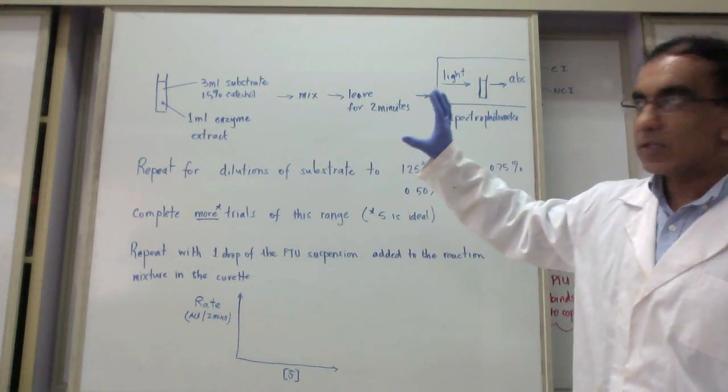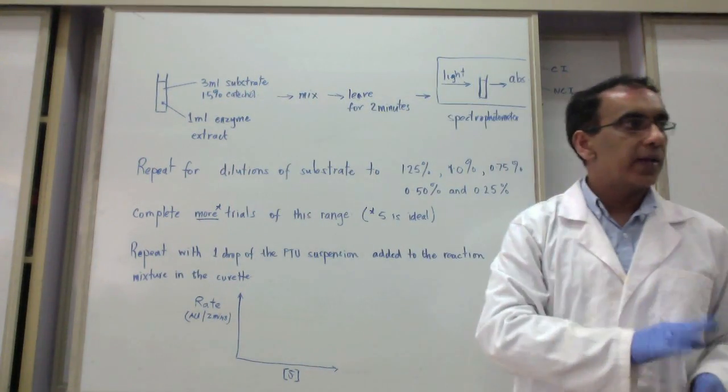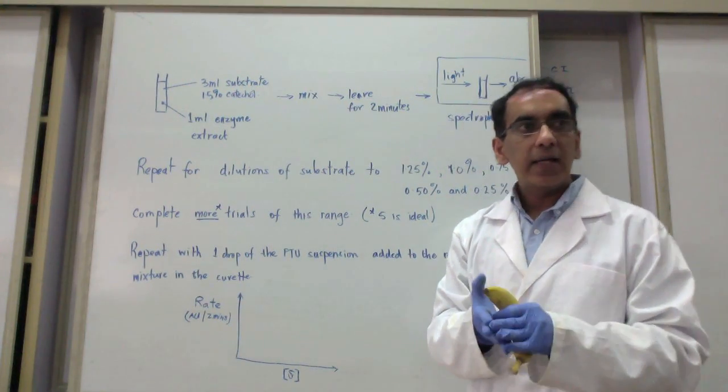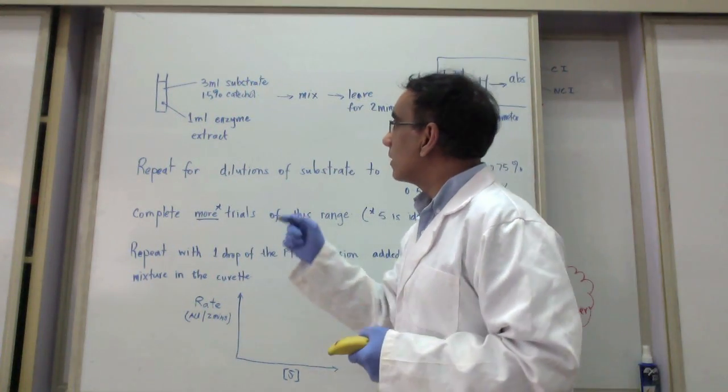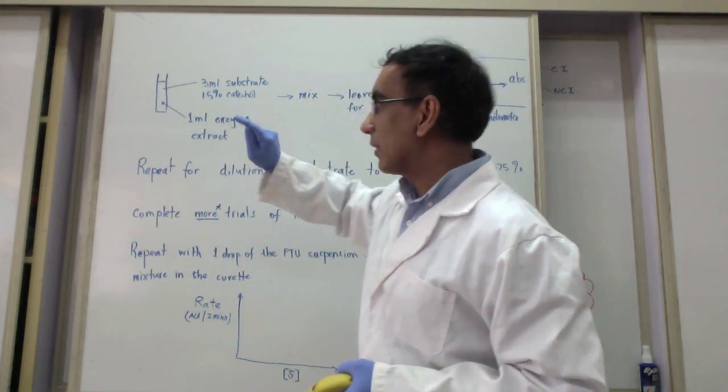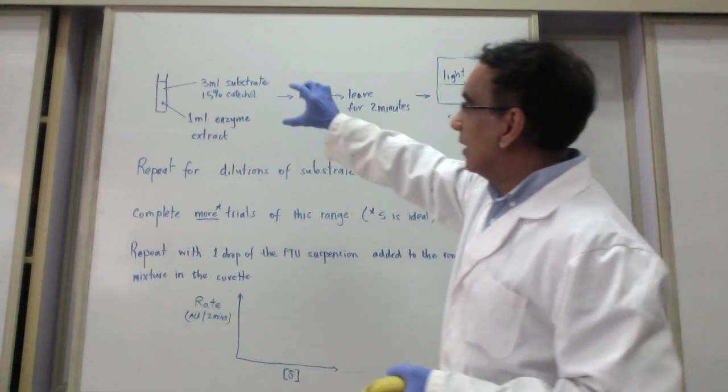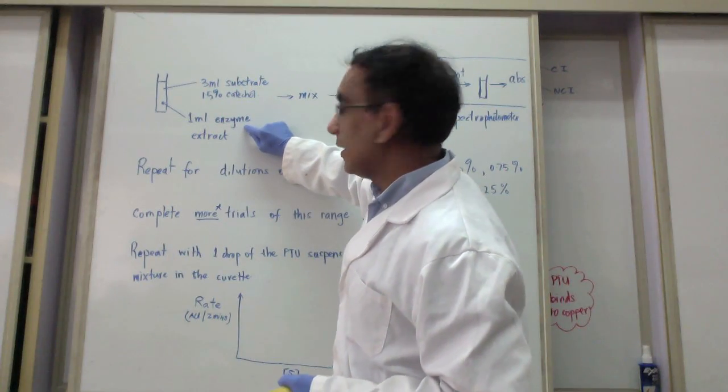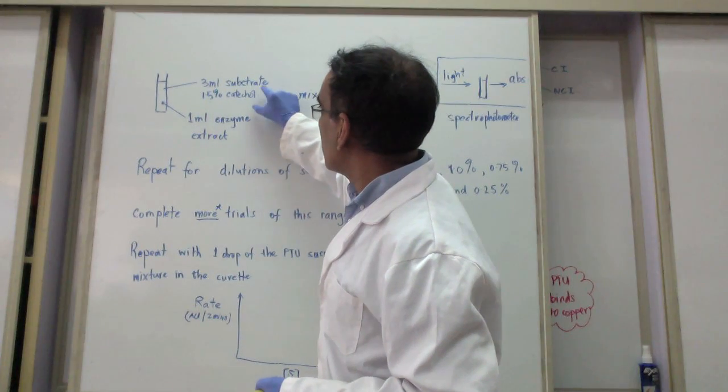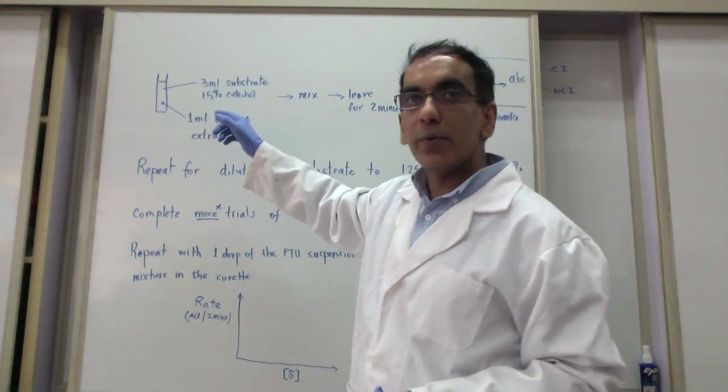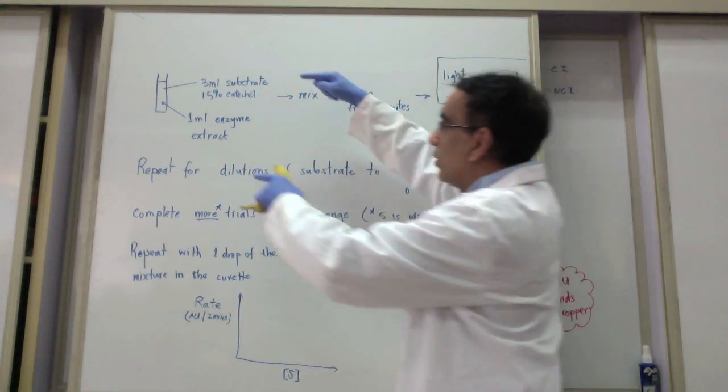To make some dilutions of a stock solution of catechol that I'm going to give you, which is 1.5 percent. We need to make sure we don't get that stuff on our hands at all, so whoever is handling it should wear some protective gear because it's poisonous. From this 1.5 percent catechol, you will have to make some dilutions to get 1.25, 1.0, 0.75, 0.50, and then you mix into this spectrophotometer cuvette 1 milliliter of the enzyme extract and 3 milliliters of the substrate.